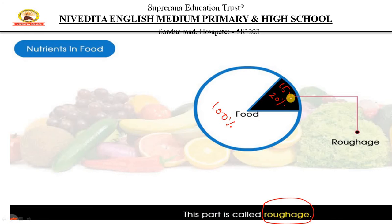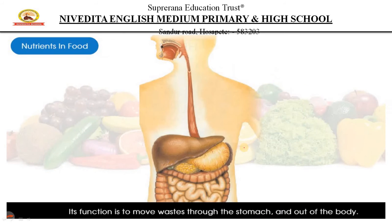What is the use of roughage? Its function is to move waste throughout the stomach and out of the body. The food that we eat is never completely converted into energy — just like when you put petrol in your bike, not all the petrol is burnt and converted into energy. You see smoke coming out of the exhaust of vehicles — cars, bikes, lorries, trucks, buses. In the same way, part of the food we eat becomes waste.